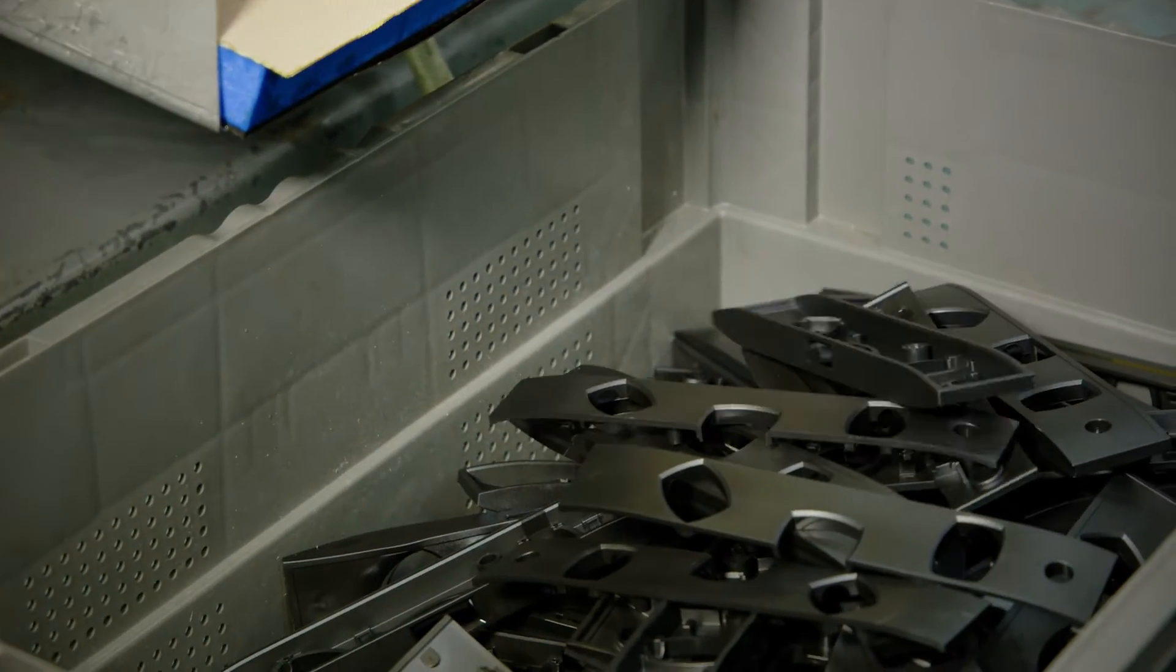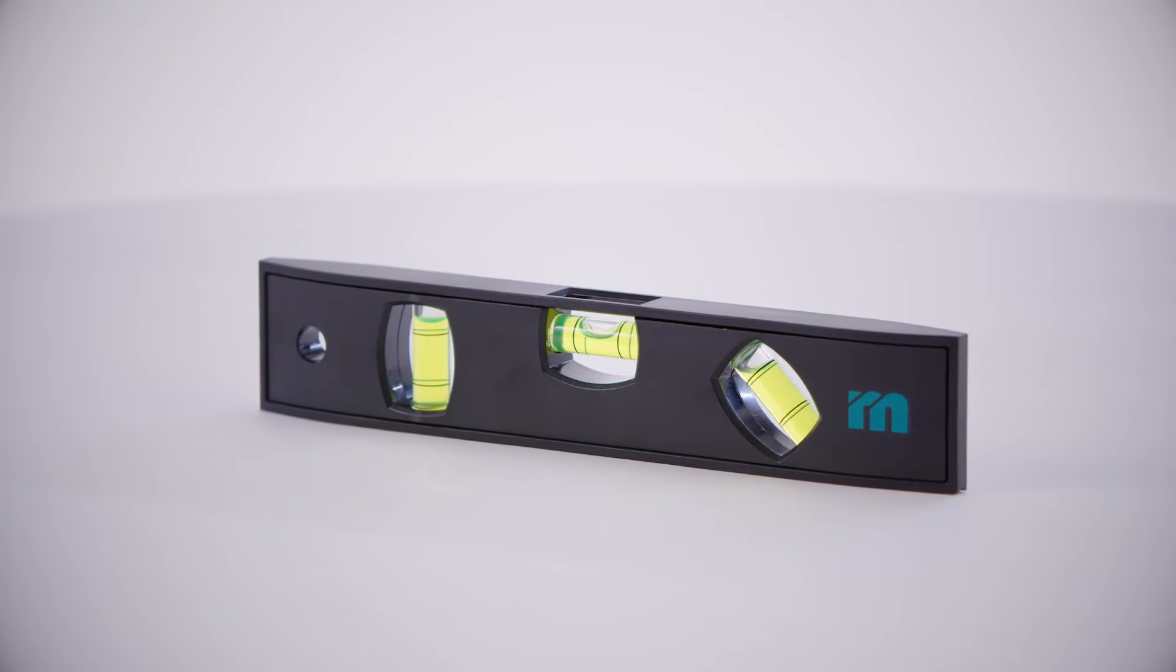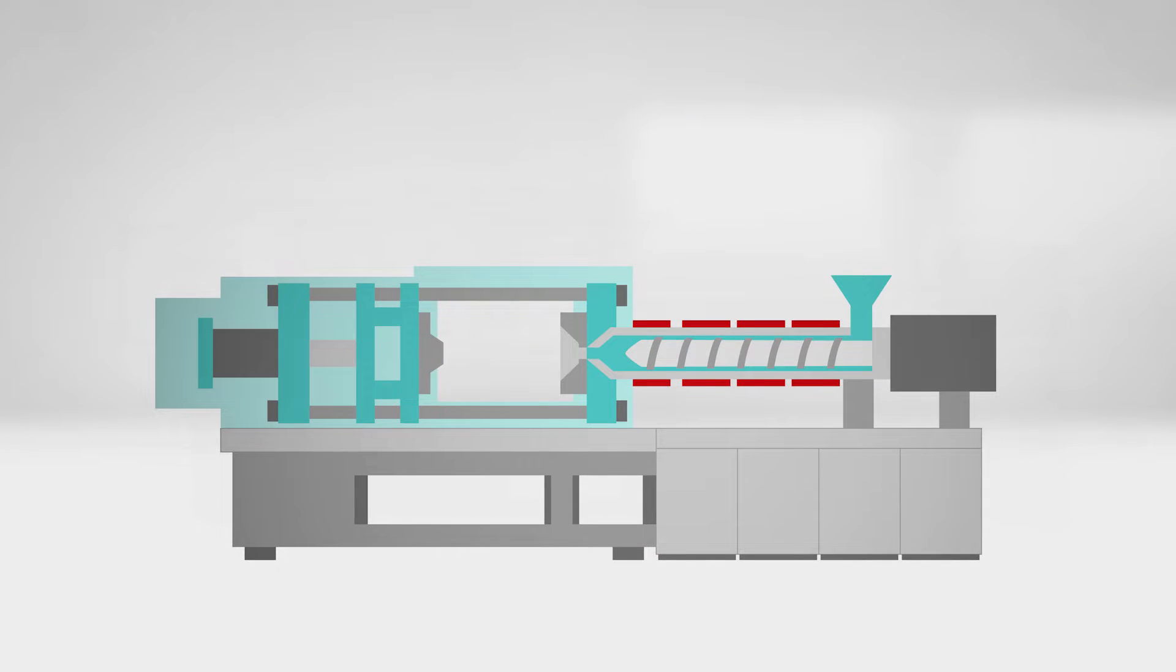Used to mold plastic parts, the spirit level is also manufactured using the injection molding process. The injection molding machine used for its production consists of three main parts: the injection unit, the injection mold, and the closing unit.